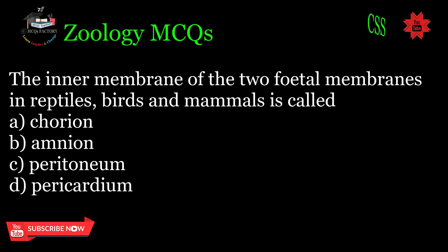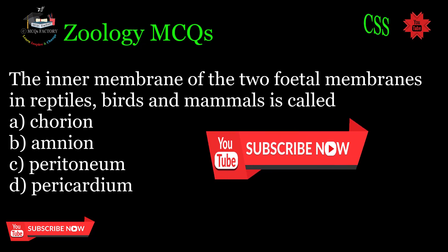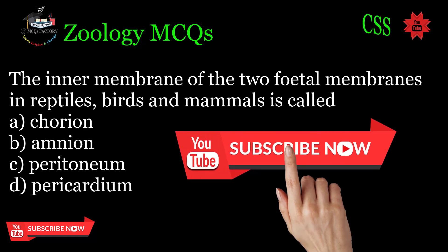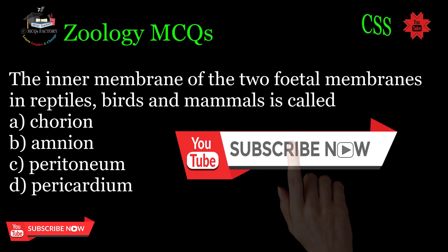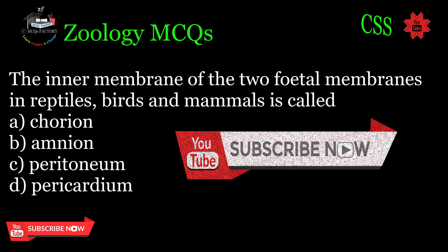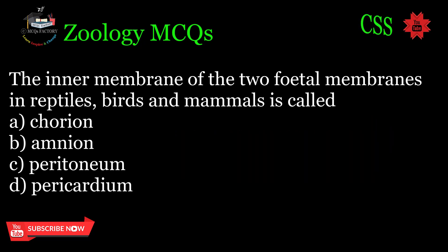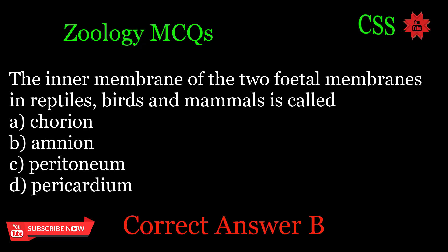The inner membrane of the two fetal membranes in reptiles, birds, and mammals is called: A. Chorion, B. Amnion, C. Peritoneum, D. Pericardium. Correct answer: B.